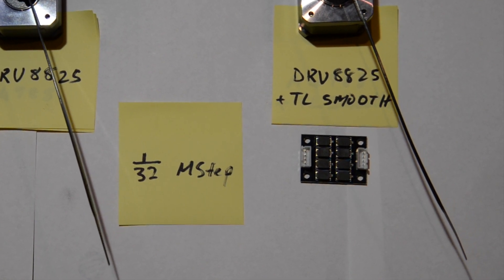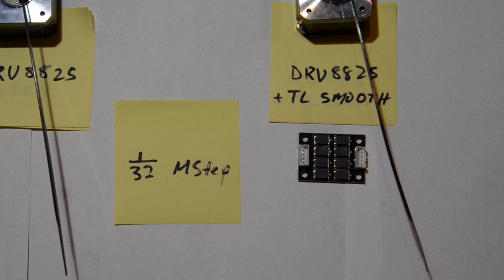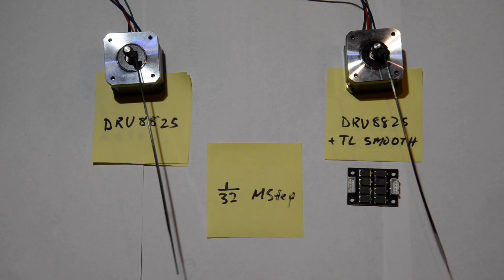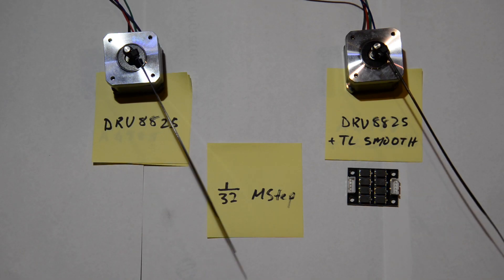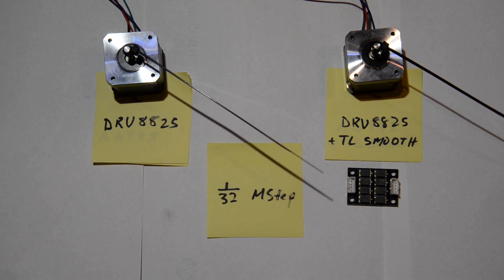So if you are using DRV8825s on extruders or Z-axis motors that move slowly, it is definitely worth using TL Smoothers. On fast-moving axes, it will probably not make much of a difference.